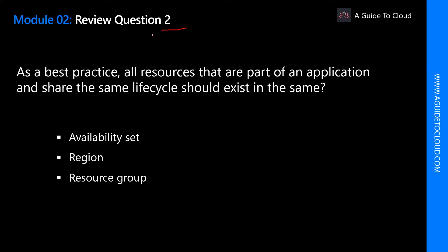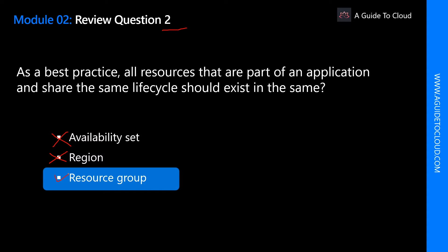As part of best practice, all resources that are part of an application and share the same lifecycle should exist in the same — what? Should they exist in the same availability set? No, because availability set gives you high availability for your services. Should they exist in the same region? Definitely not, because region is what you select to deploy a resource closer to users. The correct answer is resource group, because resources sharing a lifecycle should be placed in the same resource group.